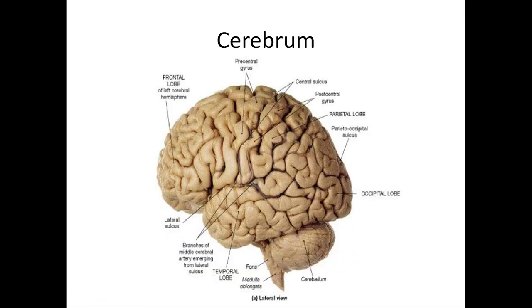Now we finally move into the cerebrum. When we think about the brain, we picture this walnut shape — our cerebrum, our cerebral hemispheres — and this is the largest part of our brain in humans. It has different lobes with names that should look familiar: the frontal lobe, named after the frontal bone; the parietal lobe; the occipital lobe; and the temporal lobe. All of these have gyri — pieces that stick out — and sulci, pieces that fold in.